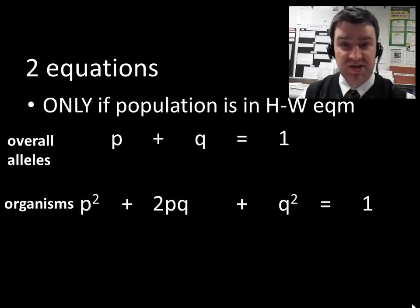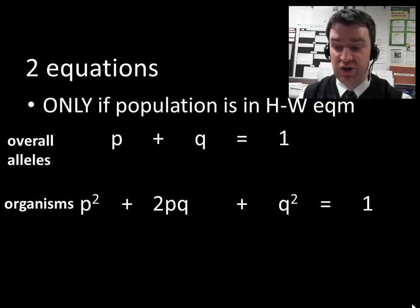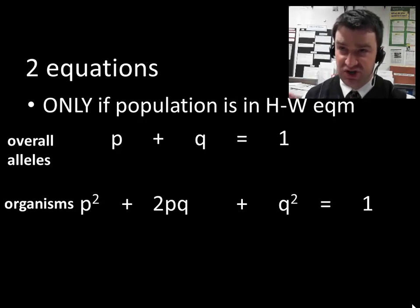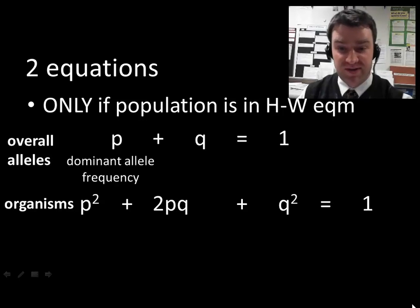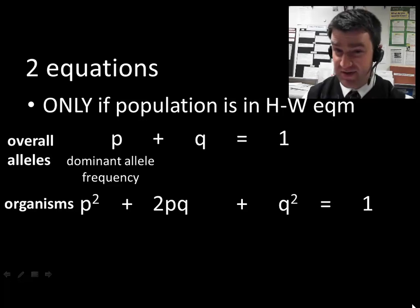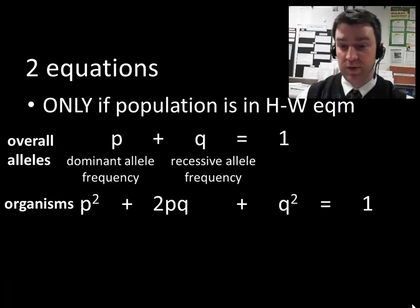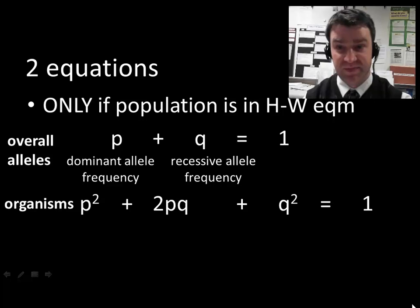We can work with the equation p plus q equals 1, and what p and q refer to is not organisms, but just the general frequency of each allele in the overall population gene pool. So p would be the overall frequency of the dominant allele. Remember that we write these as decimals, not as percentages. And q would be the recessive allele frequency.